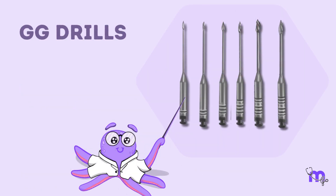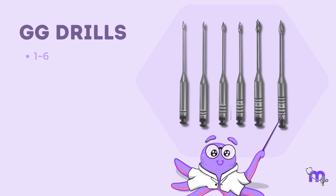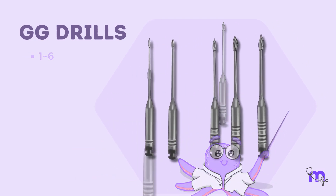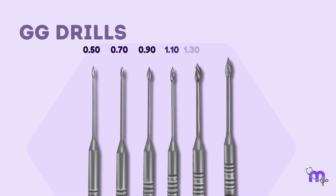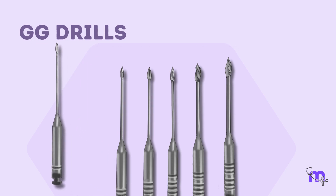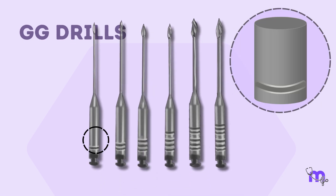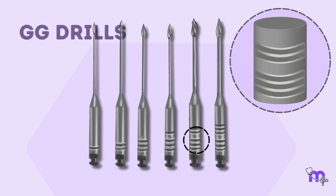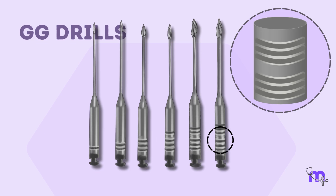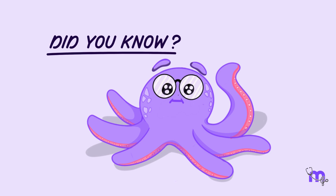Let's discuss the GG drills briefly. They are commonly available from numbers 1 to 6. Each number represents the size of the drill, with number 1 being the smallest and number 6 being the largest. The rings on the drills represent the number of the GG drill and are specific to each size.